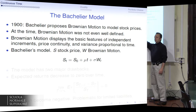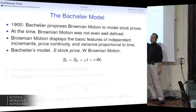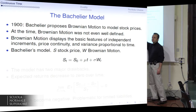In modern terms, the stock price under the Bachelier model is described by these components: there is some initial constant value, some deterministic drift, a constant mu in this case, and some multiple of Brownian motion which controls the variance of the process itself.